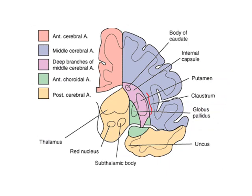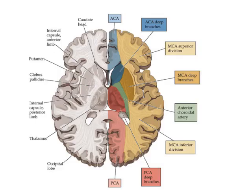These diagrams are included so that you get an idea about how the internal structures are supplied — not just thinking about the cerebral hemispheres. You need to remember that the deep structures are also supplied by the same branches, and blockages in those branches can give rise to different clinical pictures. Study this slowly and see the different territories and what can happen if they are blocked.